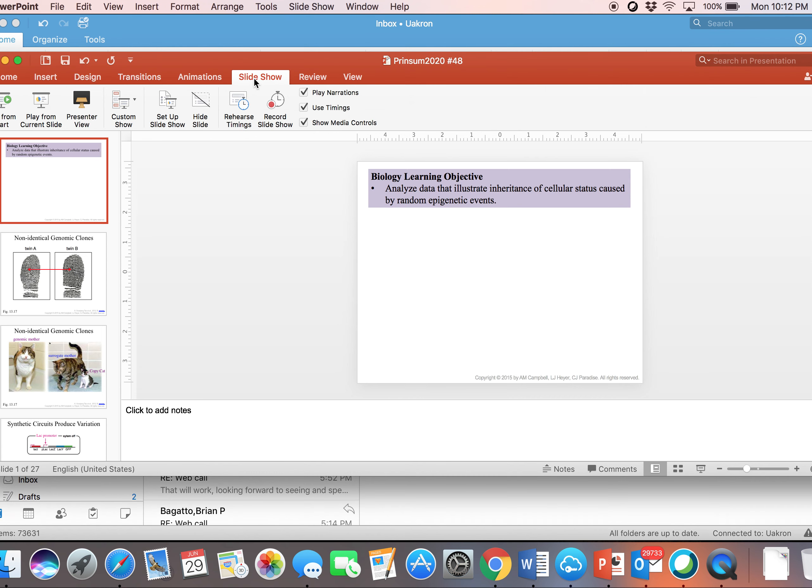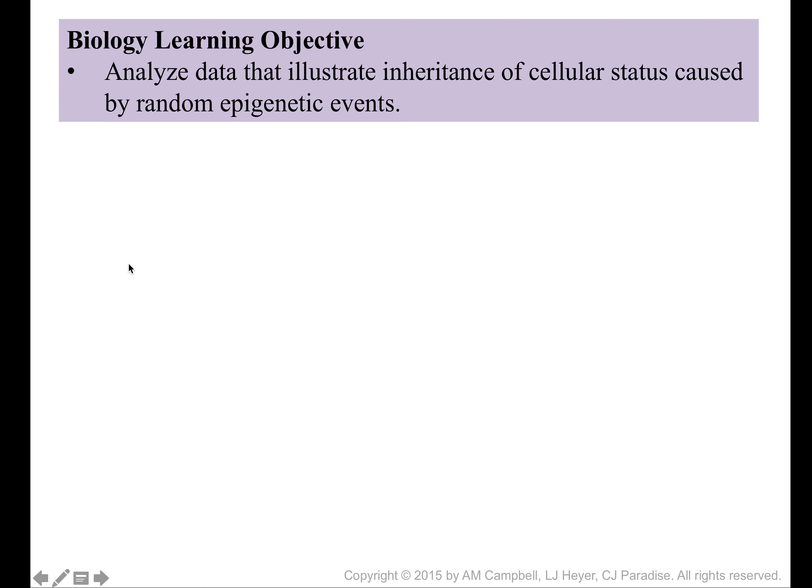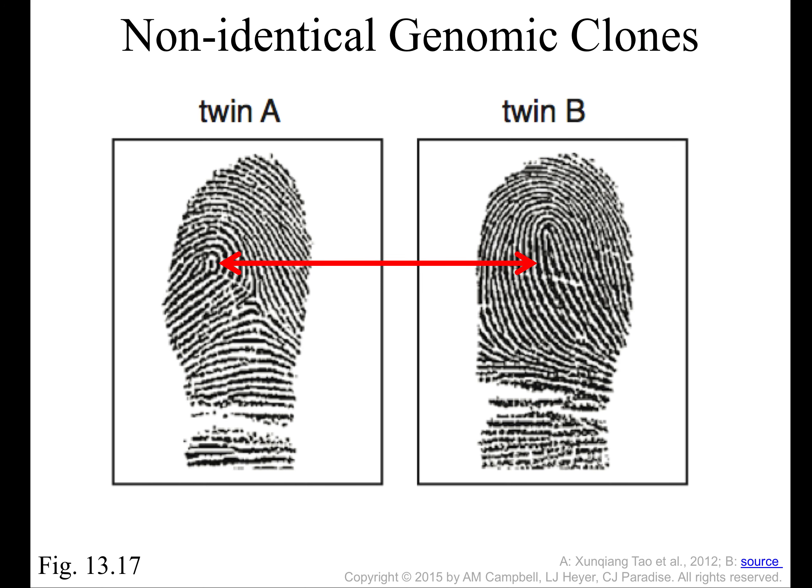This is podcast number 48, and we're going to briefly talk about how your genome can respond to the environment in ways that appear random, and how that can affect phenotype. A lot of times, science fiction movies or popular press talks about clones and gets things wrong — they think two human clones would be exact copies of each other.